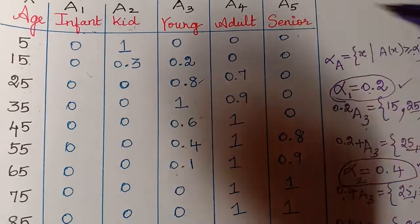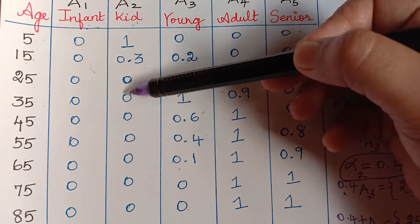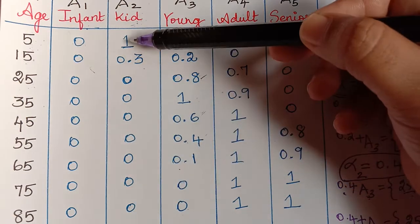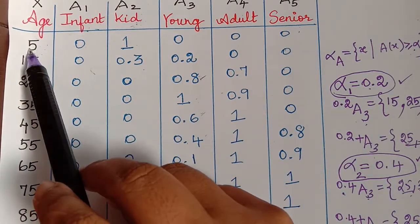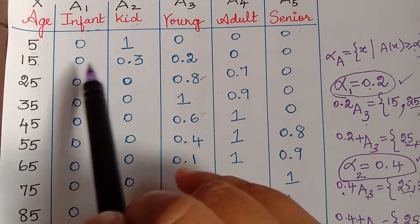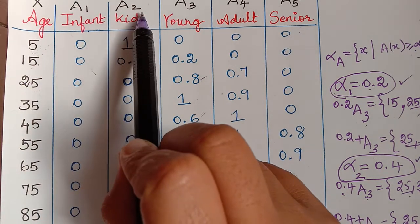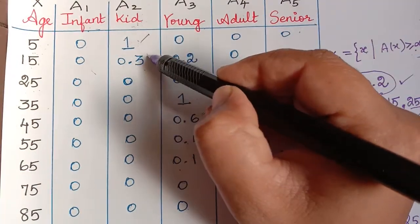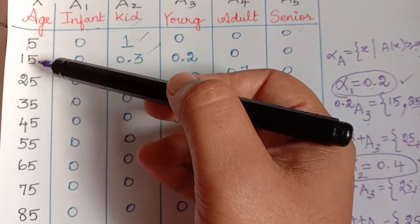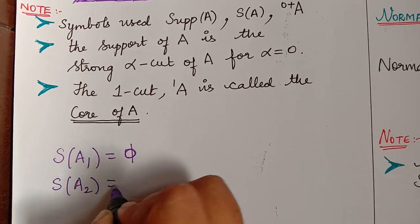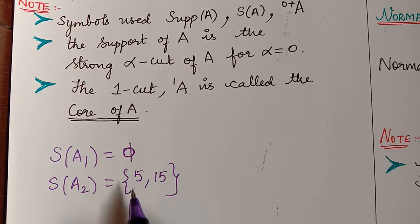Next we consider the fuzzy set A2. The membership grades greater than 0 are 1 and 0.3; all other membership grades are 0. What comes under the support of A2: for membership grade 1, the element from the universal set X is 5, and for 0.3 we have the element 15. Because only these two are greater than 0, the support of A2 is {5, 15}.